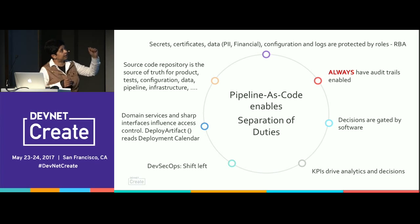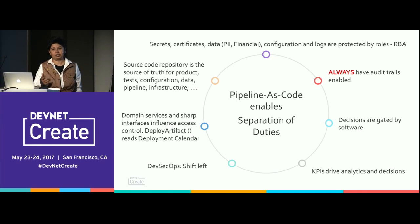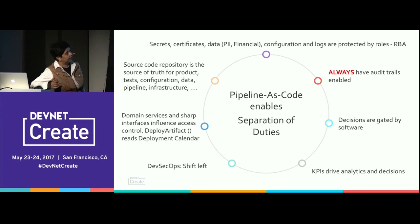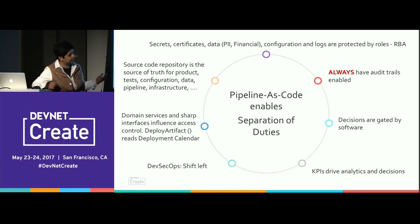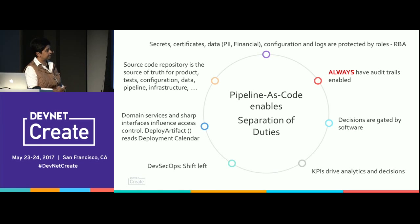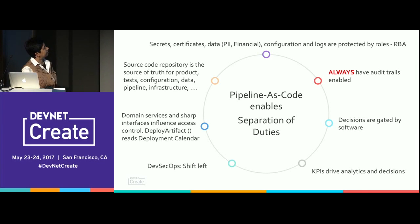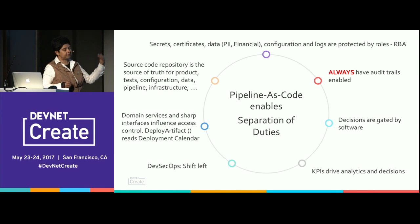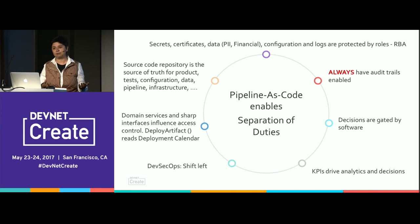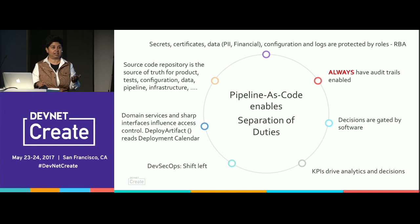By far the most important: always have audit trails turned on. If you're using AWS, this would be CloudTrail — never switch it off. Decisions are gated by software, not humans. KPIs drive decisions, not opinions — these are data-driven decisions. DevSecOps is a shift left: you pull everything up front instead of leaving key things to happen at the end of your pipeline. Domain services and sharp interfaces influence access control. A deployment calendar is a simple utility — a retail company doesn't deploy to production on Thanksgiving. You don't need a human being to tell you that; it's a simple piece of software built into the code. Developers don't get to edit the deployment calendar; somebody in your organization sets up the rules and the pipeline simply follows them.